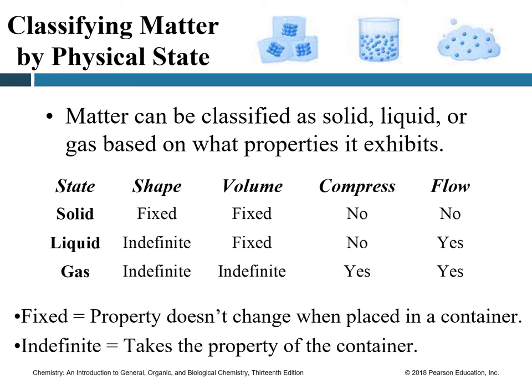Another way of classifying matter is based on physical state — matter can be solid, liquid, or gas. These are called different states of matter. For example, water can exist as solid (ice), liquid (water), or gas (water vapor). Every matter can exist in different states; one state may be preferred, but basically all three are possible.